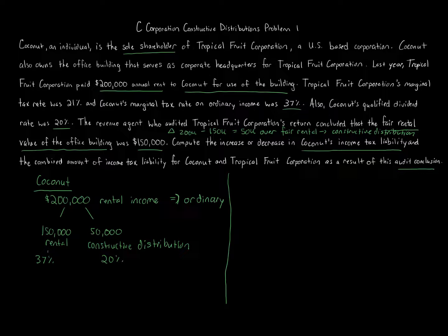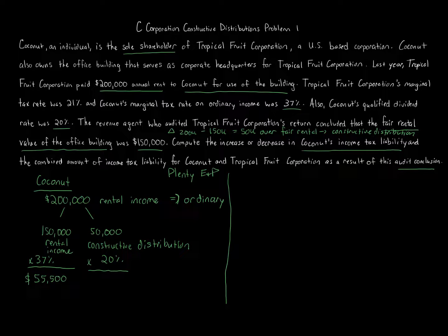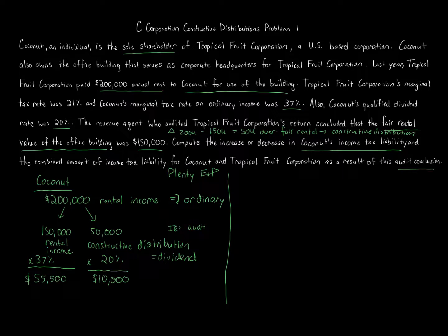Let's calculate that. $150,000 rental income — what the IRS says should have happened — multiplied by 37% gives $55,500. Then the $50,000 constructive distribution: assuming we have plenty of earnings and profits, that distribution becomes a constructive dividend. With lots of E&P, we assume it qualifies. So $50,000 times 20% equals $10,000. These are the audited results — the IRS audit change. Originally it was $200,000 of rental income all as ordinary income; now $150,000 is rental income and $50,000 is a constructive dividend taxed at 20%.